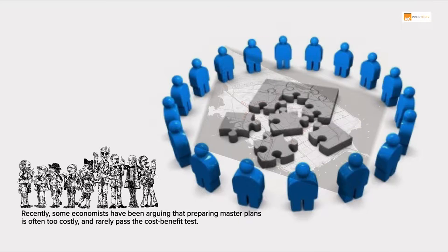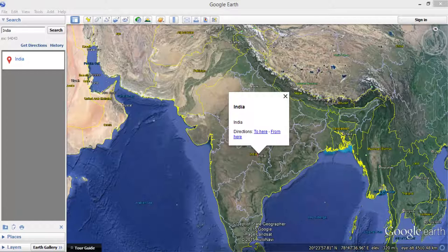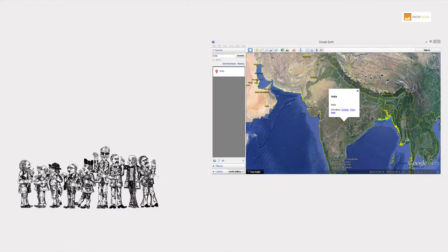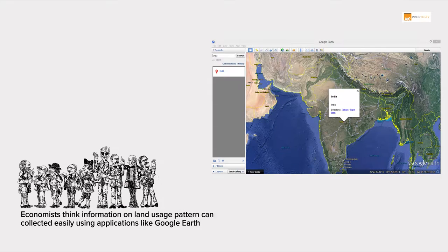Some economists have recently been arguing that preparing master plans for cities is often too costly and does not usually pass the cost-benefit test. As we now have applications like Google Earth, economists think that we can collect more information about land usage patterns.